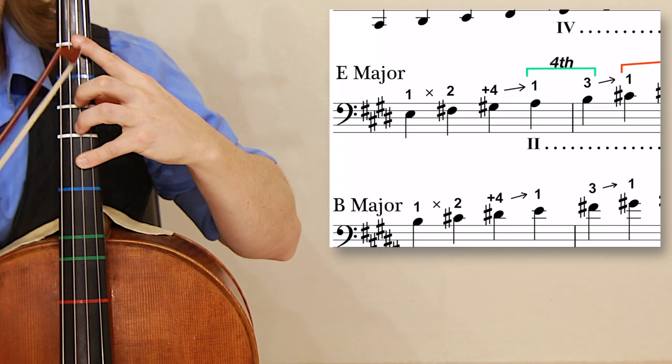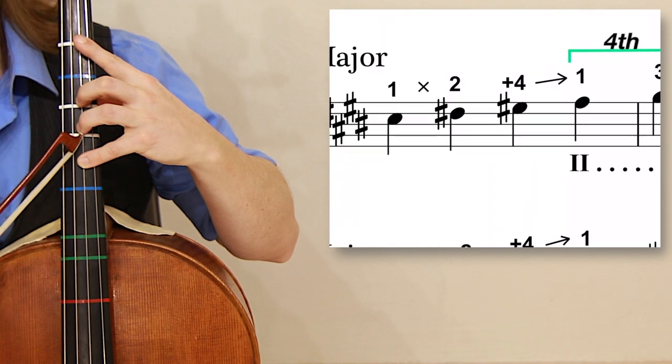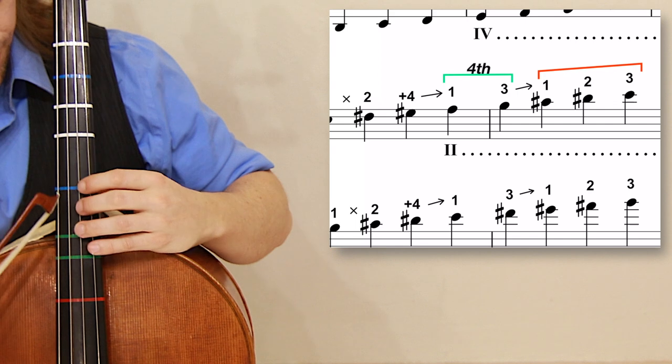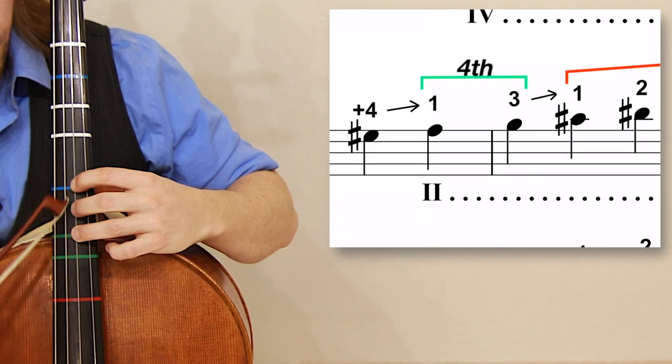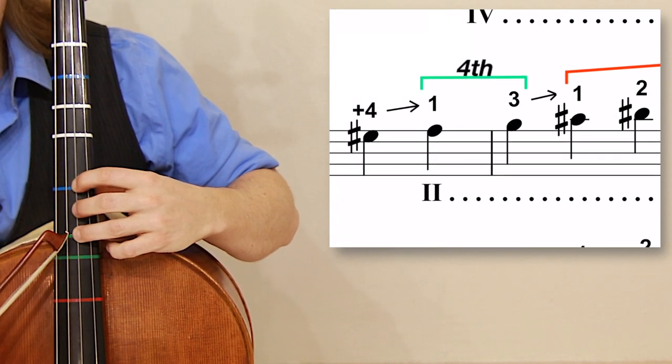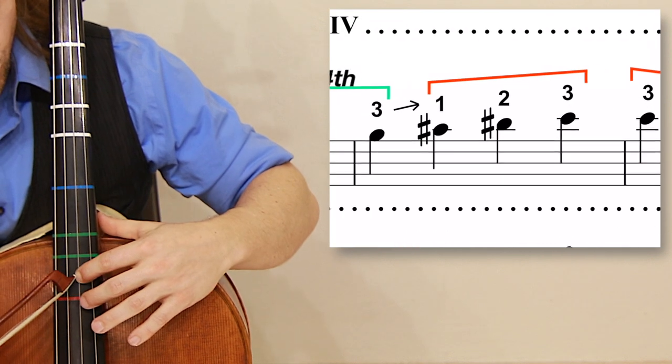E major calls for us to start in extension right here. We do a one-two-plus-four, then shift up once more to the fourth position, and shift up once more. Instead of putting the two where the sharp was, we're putting our first finger.